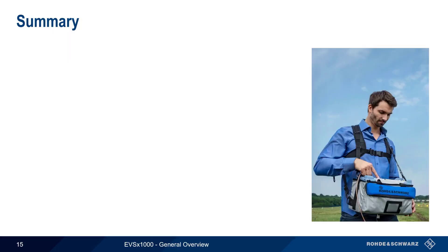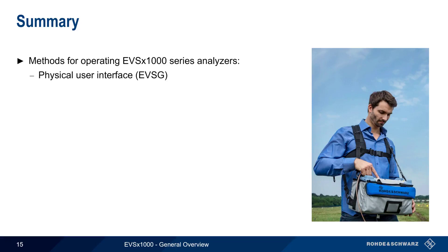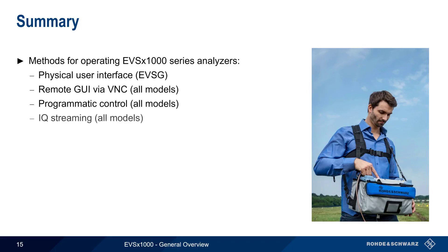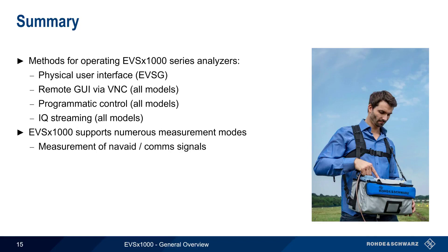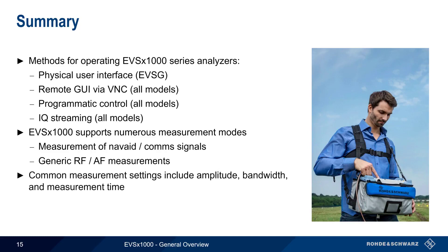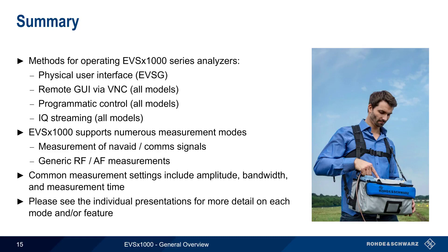This presentation provided a general overview of EVS1000 series analyzers. We covered the four different methods for operating the EVS: the EVSG's physical user interface with a screen, buttons, and rotary knob; remote GUI access over VNC; programmatic control; and IQ data streaming. The measurement functionality is divided into different measurement modes — some for NAVAID and COM signals, and some for generic radio and audio frequency measurements. Measurement settings common to all modes include amplitude, bandwidth, and measurement time. Please see the individual presentations for each measurement mode or feature for more detailed configuration and usage information.